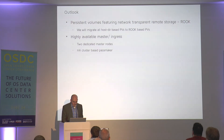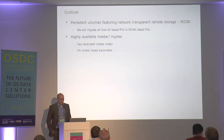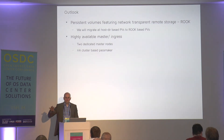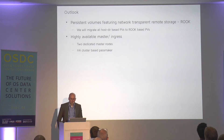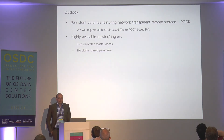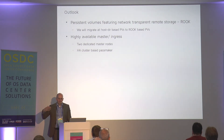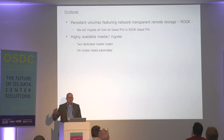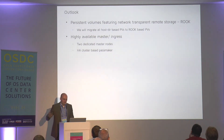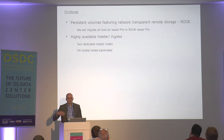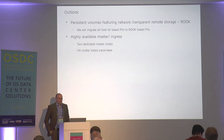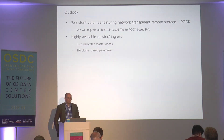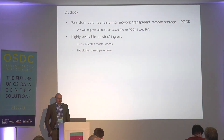Quick outlook: for persistent volumes, we currently use the host disk and are looking into a tool called Rook, which allows you to deploy a Ceph cluster on Kubernetes much more easily than deploying Ceph manually. We will also migrate to a highly available master, and to save machines we want to look into an HA cluster based on Pacemaker.